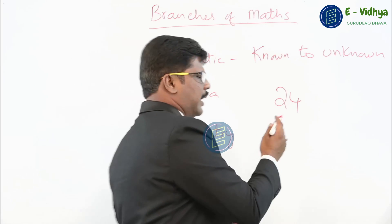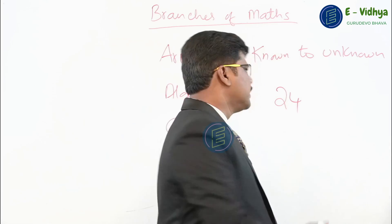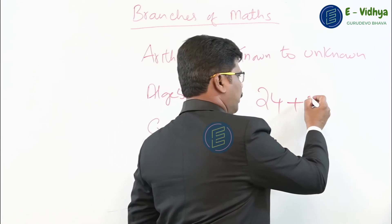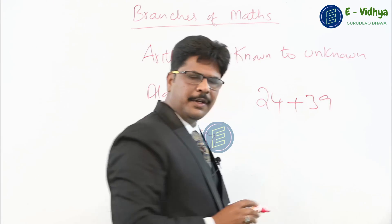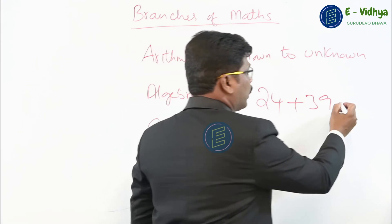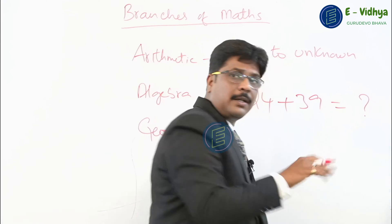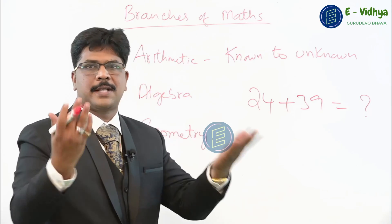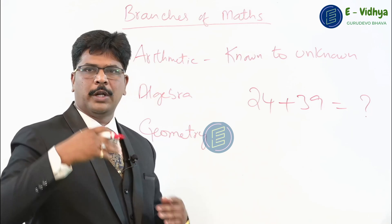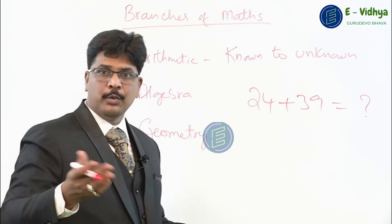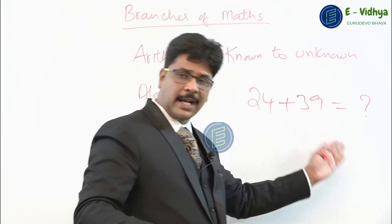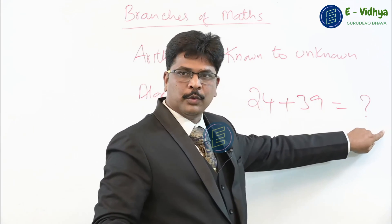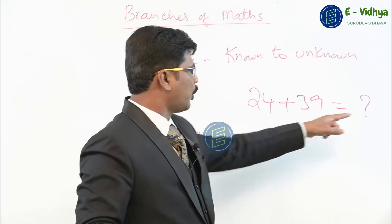Because it's mathematics, we have to use some operation — addition, subtraction, multiplication. So I will just use the operation plus. You know this number, and I take one more number like 39, and you know this number also. But when you add both numbers, what would the answer be? We can't just say it randomly — we need to logically calculate it. That's called known to unknown.